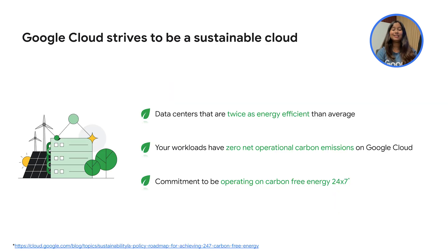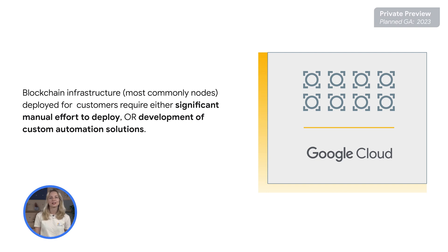Google Cloud is the cleanest cloud in the industry, being carbon neutral since 2007 and with the goal of running our data centers on carbon-free energy 24/7 by the year 2030, as announced in our sustainability policy roadmap. We understand that self-managed nodes are often challenging to deploy and require constant management and time investment, which can be especially challenging for smaller teams that want to focus on their core business.